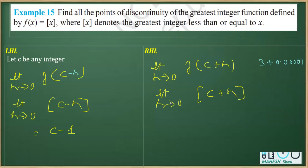approximately 0, then we get 3.0000 something, whose greatest integer function is 3 only. That means if I take c + h where c is an integer, the greatest integer is c. So we find that LHL is c - 1 and RHL is c.